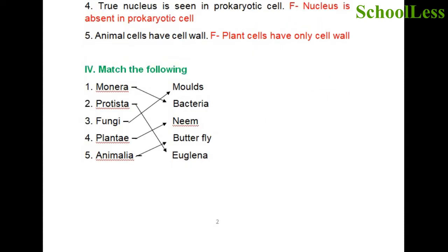Question 4: Match the following. Five individual names on the left must be matched to five names on the right. Monera — example is bacteria. Protista is one of the five kingdoms and Euglena is an example of protista. Fungi — molds are an example. Plantae — the Margosa tree belongs to the plantae kingdom. Animalia — a butterfly is an example of the animalia kingdom.